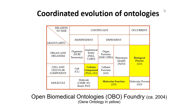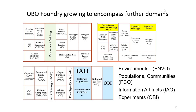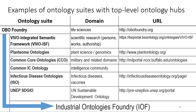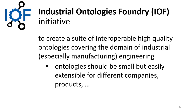This was the first sketch of what the OBO Foundry should look like, with the gene ontology marked out in yellow, organism taxonomy, cell types, different molecule ontologies, and so forth. Then it grew to encompass the information artifact ontology, the environment ontology, the population ontology, and so forth. Gradually, people started to experiment with the same hub-and-spokes approach outside biomedicine — for instance, the common core ontologies used in military research, and the United Nations Environment Programme Sustainable Development Ontology for supporting sustainable development data management for the United Nations.